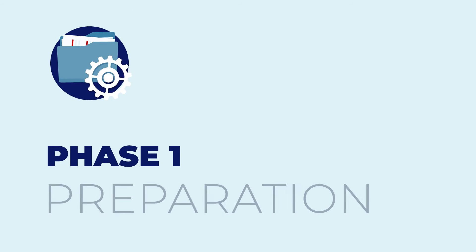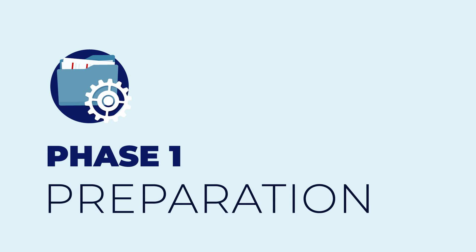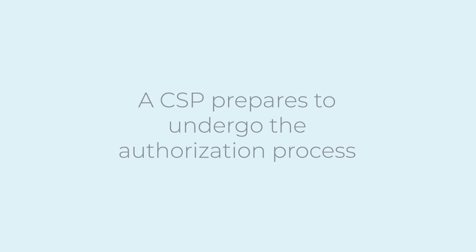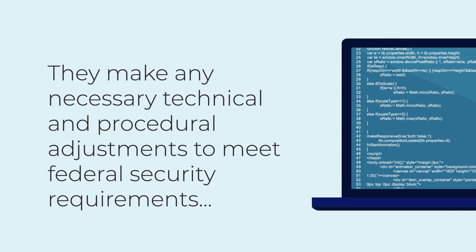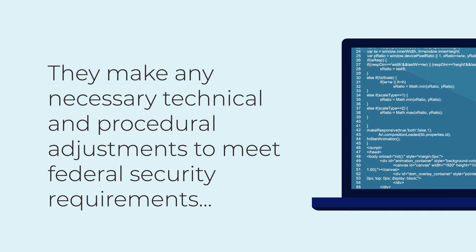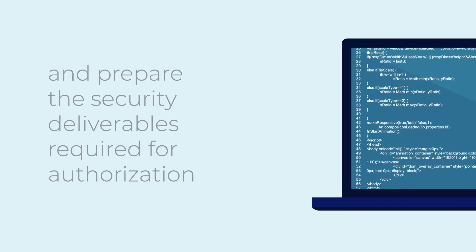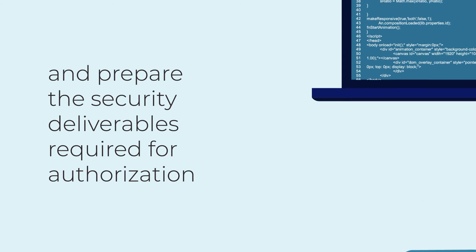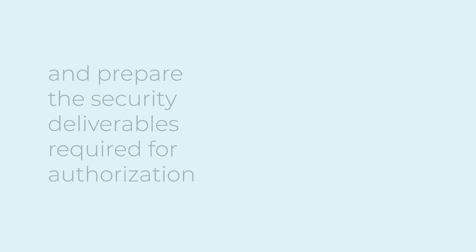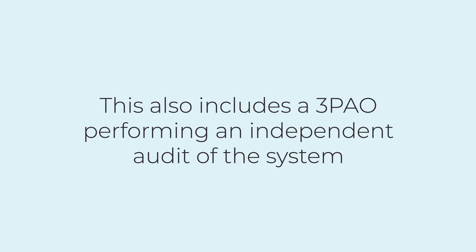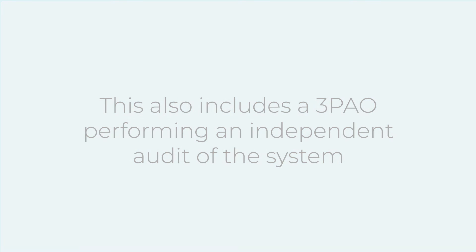In the first phase, preparation, a CSP prepares to undergo the authorization process. They make any necessary technical and procedural adjustments to meet federal security requirements and prepare the security deliverables required for authorization. This also includes a 3PAO performing an independent audit of the system.